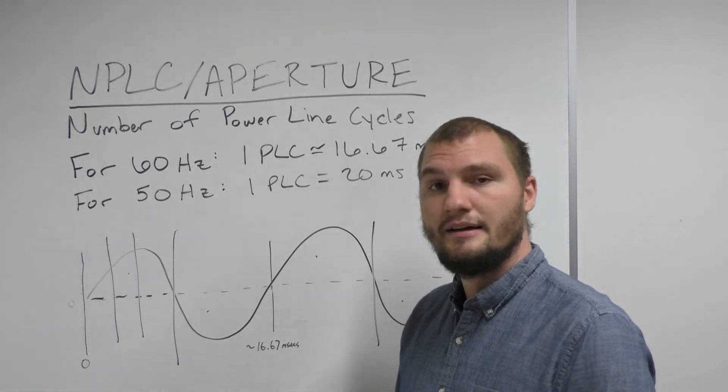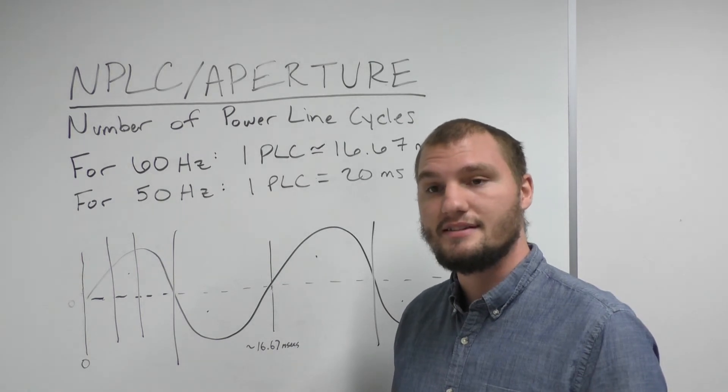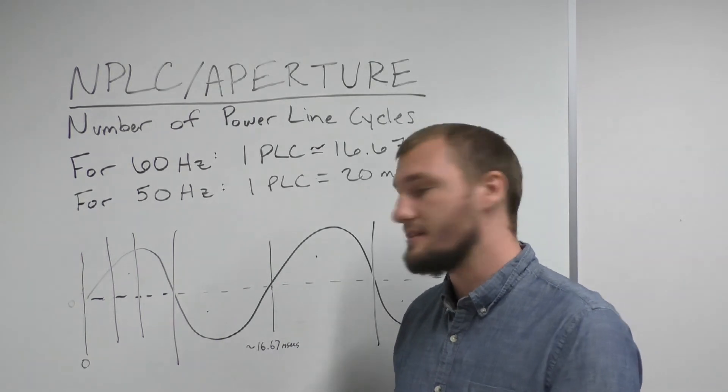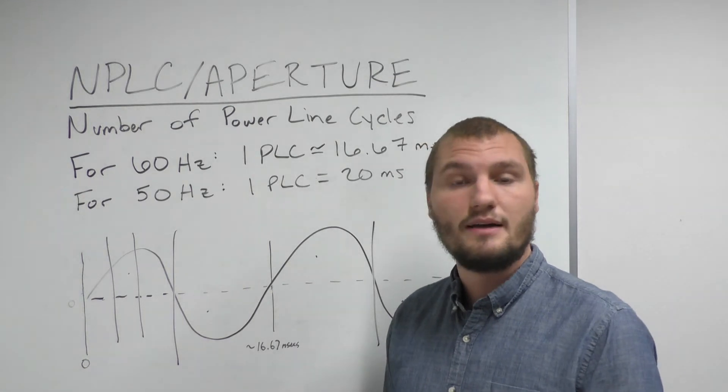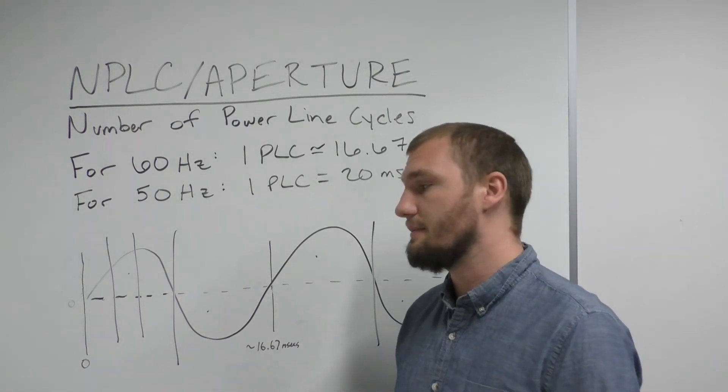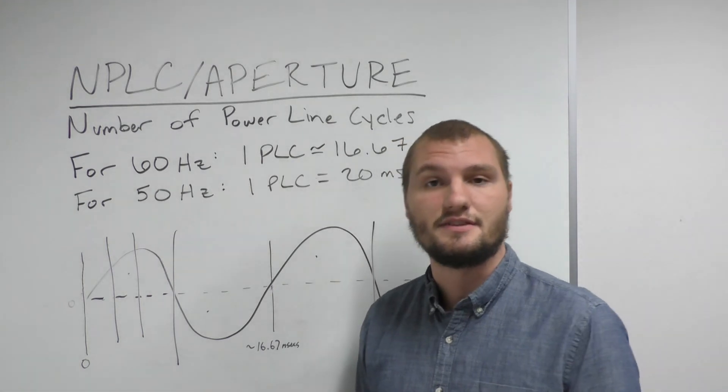But the basic takeaway from all of this is that if you want very fast measurements set your PLC as low as possible. If you want very quiet measurements set it as high as possible. Typically we recommend about five or six so that you still have some speed left.